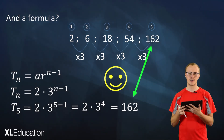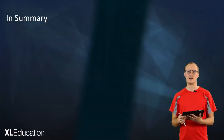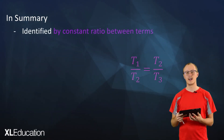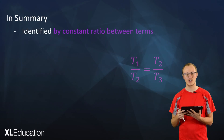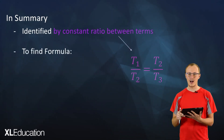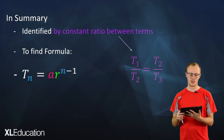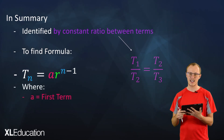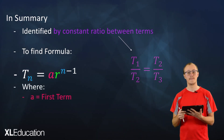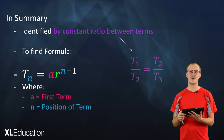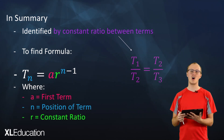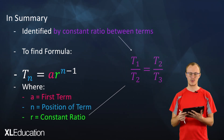In summary, a geometric sequence is identified by the constant ratio between terms. The formula is T_n equals a times r to the power of n minus 1, where a is the first term of the sequence, n is the position of the term you're looking for, and r is that magical constant ratio. That's all from me, good luck!